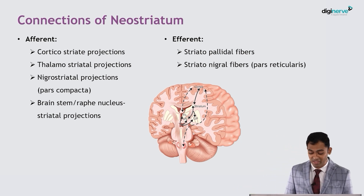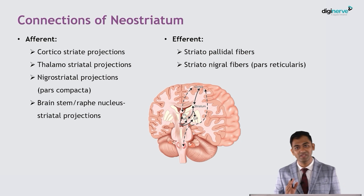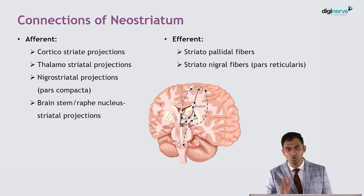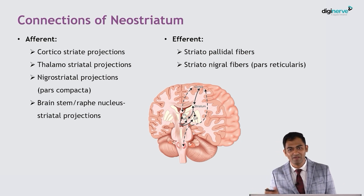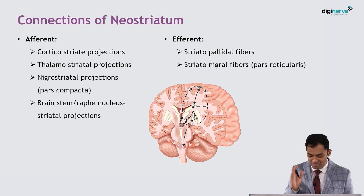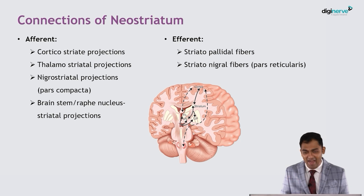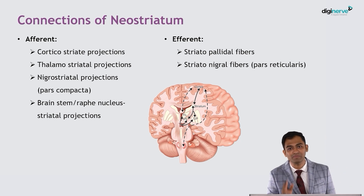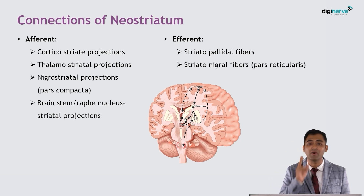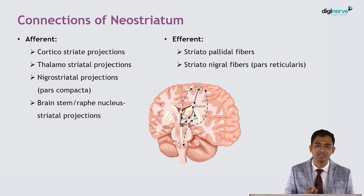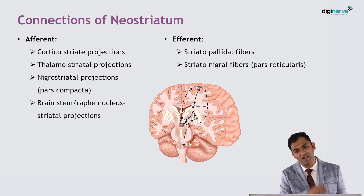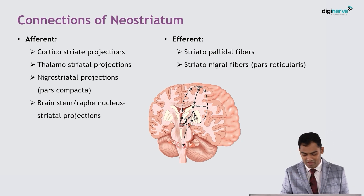Now let us look at the efferents from the striatum. These efferents will go to the pallidum, called the striatopallidal fibers, and also to the substantia nigra — but now the pars reticularis. These are called the striatonigral fibers.